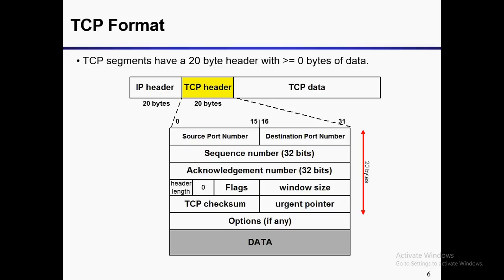TCP resends the segments when the checksum is invalid — that's why it is reliable. Urgent pointer is only valid when the URG flag is set — I'll cover that topic in my next videos. Options include things like maximum segment size and window scale option, which can increase the TCP window from 16 bits to 32 bits, but it's only used in the synchronization first segment (SYN segment) while sending the TCP header.